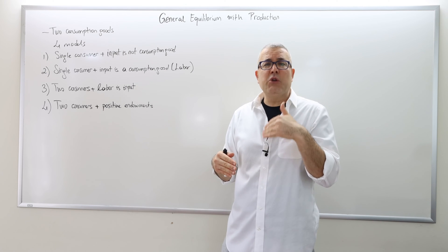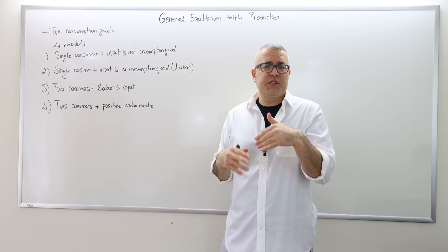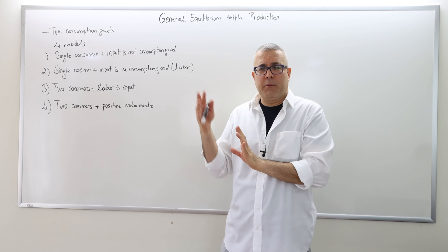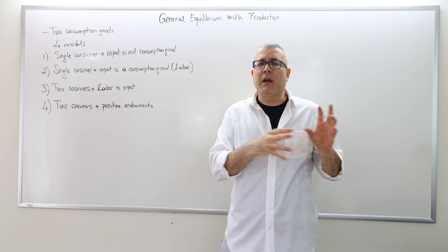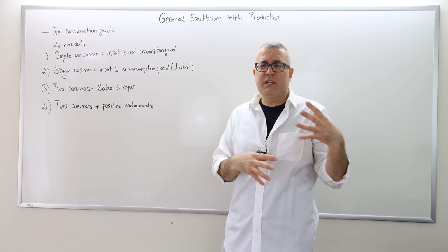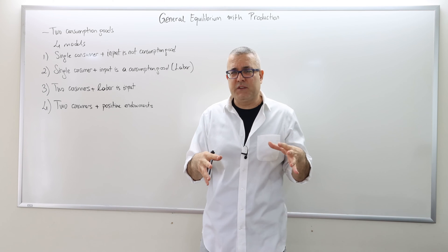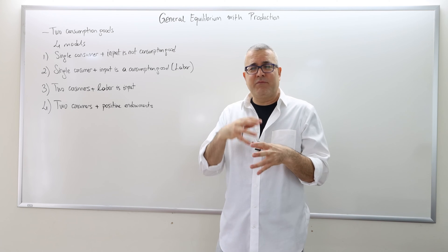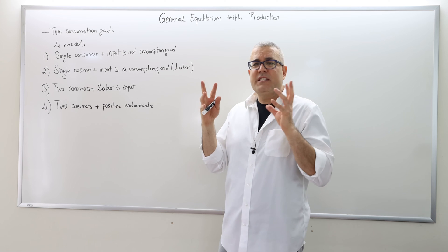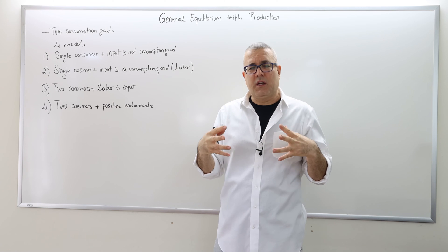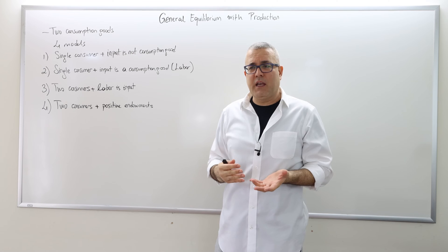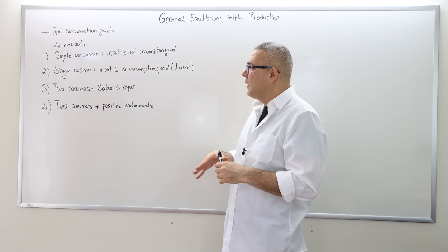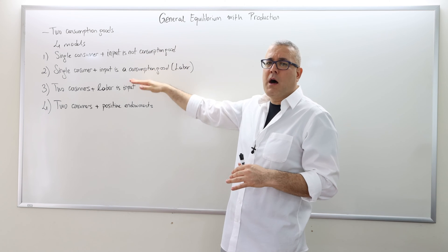There's going to be a new agent in the model, which is the firm. The firm produces some outputs, which I'm going to call consumption goods, by using some inputs. Usually we're going to use a single input just for simplicity. Because now we have a third or extra agent, the standard model with two goods and two agents is more complicated. For pedagogical reasons, I'm going to follow sort of four models.